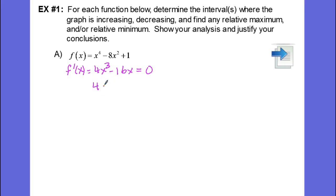So we can factor out a 4x, and that's going to leave us with x squared minus 4 equals 0, and this gives us x equals 0, x equals negative 2, and x equals positive 2.